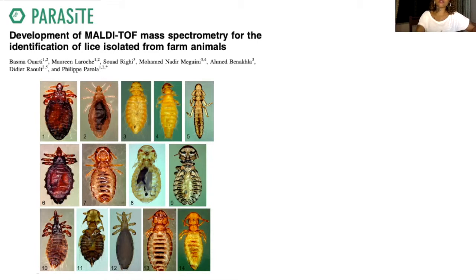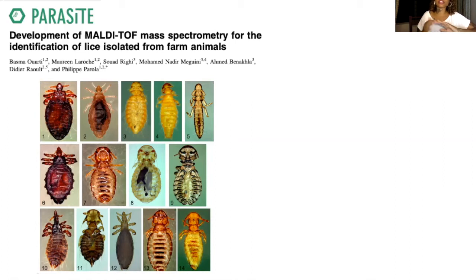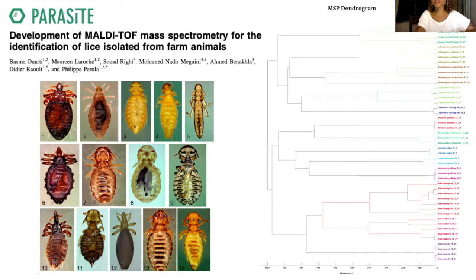We also worked with Basma on the identification of lice collected from animals in Algeria. Some look quite similar, and they're small insects. The supporting morphological documentation barely exists, and what's there is hard to find. She did great morphological identification work, but molecular biology was a nightmare — GenBank had sequences that were unavailable or of outrageous quality. We finally managed to create our database for all her lice species, and each species was properly distinguished — each color in the dendrogram represents a species.